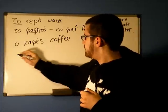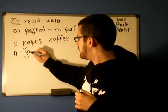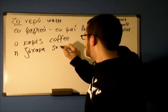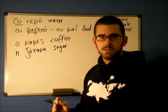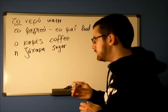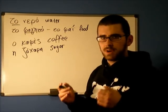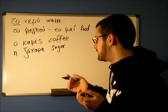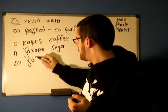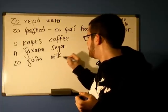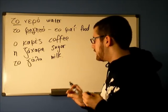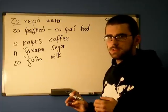If you want sugar with it, then you might need "zakhari". It's a female noun, as you can see. And maybe you might get asked — usually the waiter, the person who's going to bring you the coffee, is going to ask you "me gala?", with milk. "To gala" is milk. I think these are basic nouns — you could ask for milk any time of the day, you could ask for sugar, and so on.